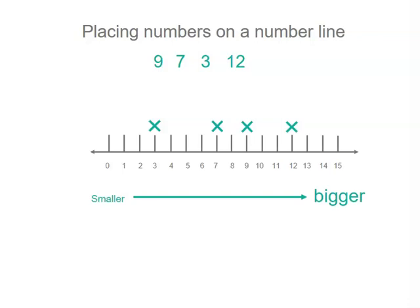Now you'll notice that the numbers on the left, where the 0 starts, are smaller. And as we go to the right-hand side, which is the direction my green arrow's pointing in, the numbers get bigger.